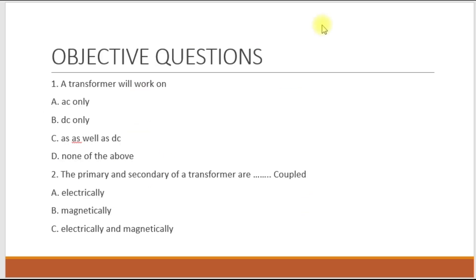Now some objective questions. First: a transformer will work on — AC only, DC only, or AC as well as DC? A transformer works with AC only — option A is correct. Second: the primary and secondary of a transformer are coupled — electrically, magnetically, or electrically and magnetically? As explained, they are magnetically coupled; there is no electrical connection between primary and secondary — option B is correct.